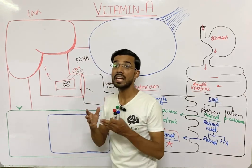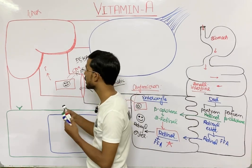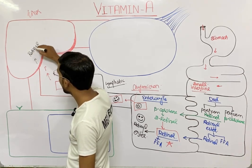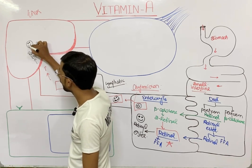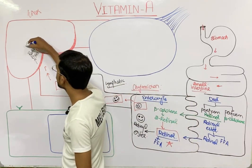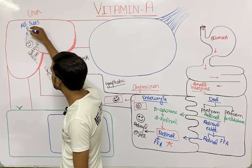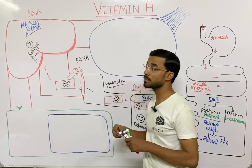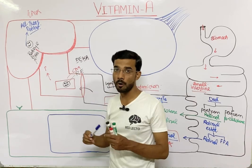In the bloodstream, the chylomicrons converge and the retinol esters enter into the liver. In the liver, the retinol ester is converted into all-trans retinol, meaning every double bond in the retinol molecule is in the trans configuration.